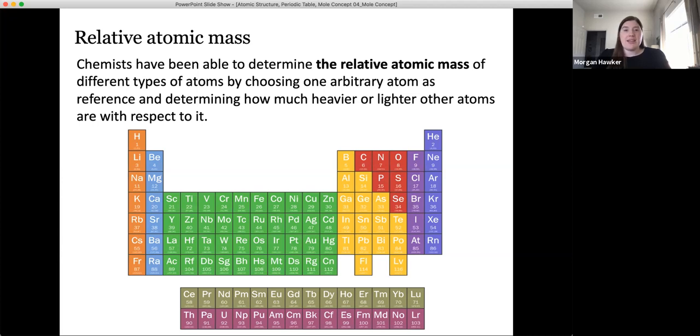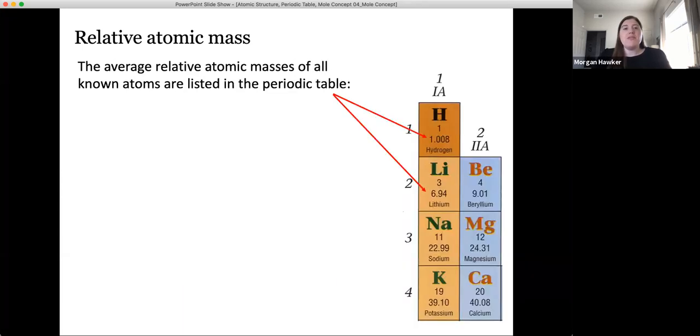It's important to recognize that atoms of different elements have different masses, which are said to be relative because they're all in reference to the mass of one specific type of atom, which is carbon-12. You'll see the relative atomic masses listed on the periodic table. This value is key in determining the number of particles in a sample.